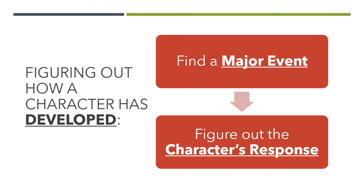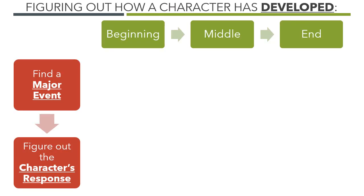Now you're going to be tasked with figuring out how a character has developed. Sometimes a question will ask: how has the character grown? How has the character changed? What is the character development? The strategy for that is to find a major event — a big thing that would appear on your plot map because it's so important — and to ask yourself: what was the character's response? How did the character respond to this major event? I'm setting up a chart where I have the major event and then a spot where we can write the character's response.